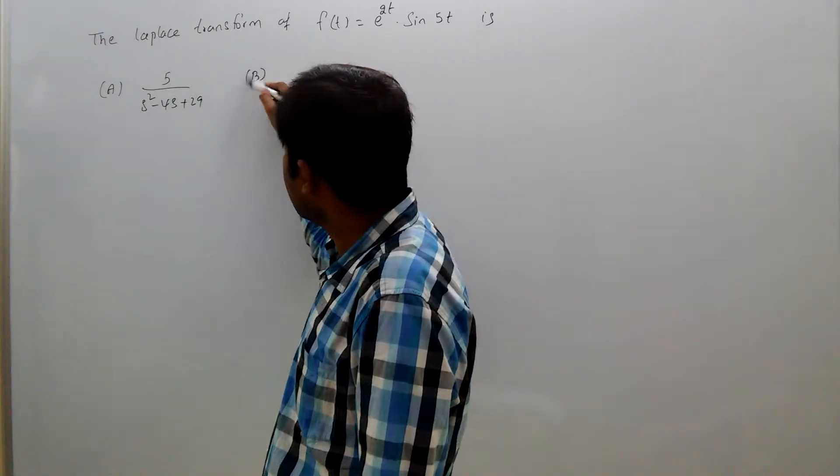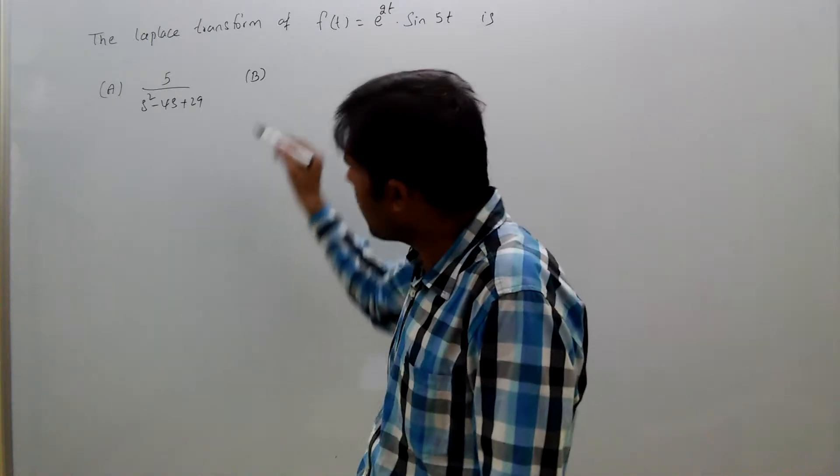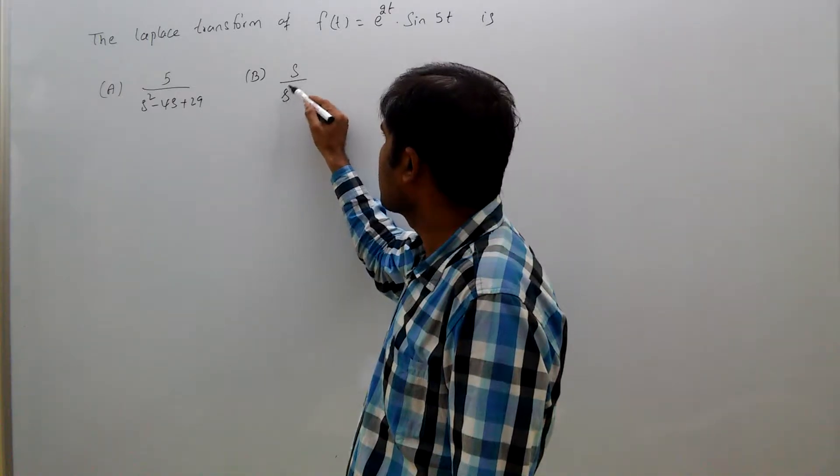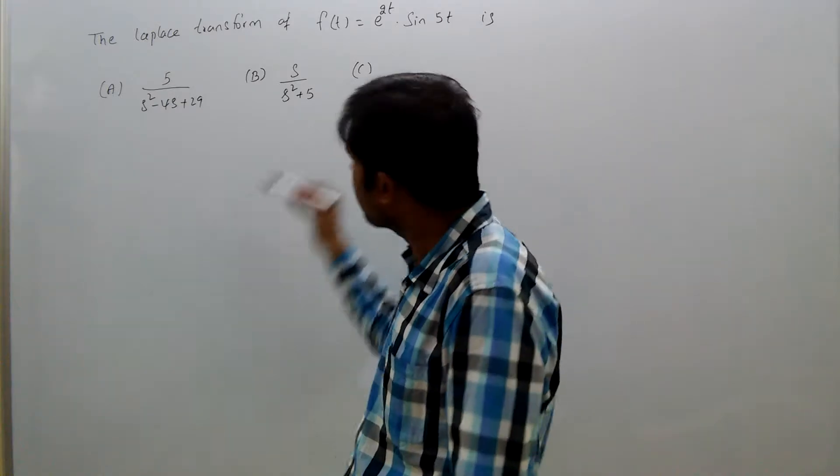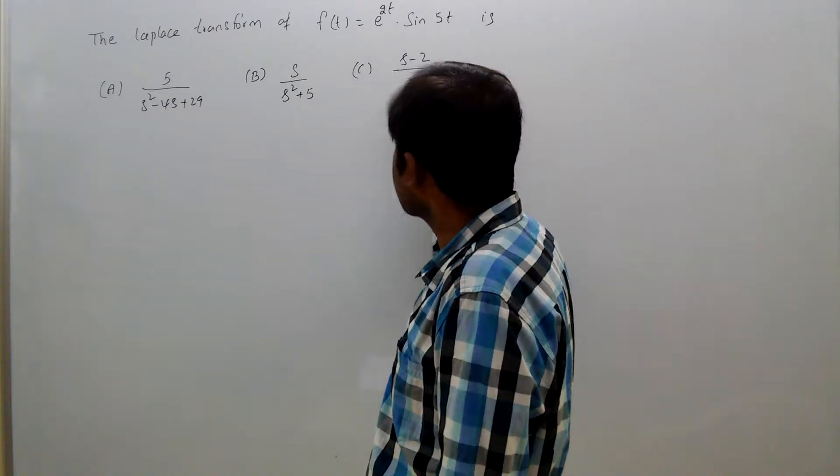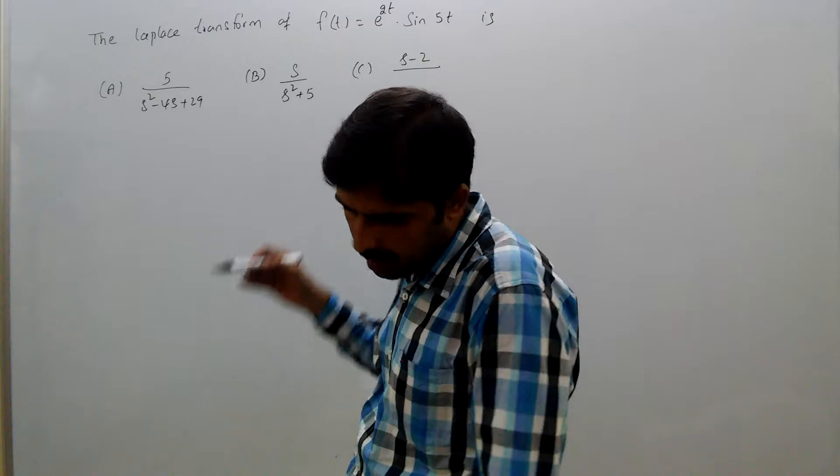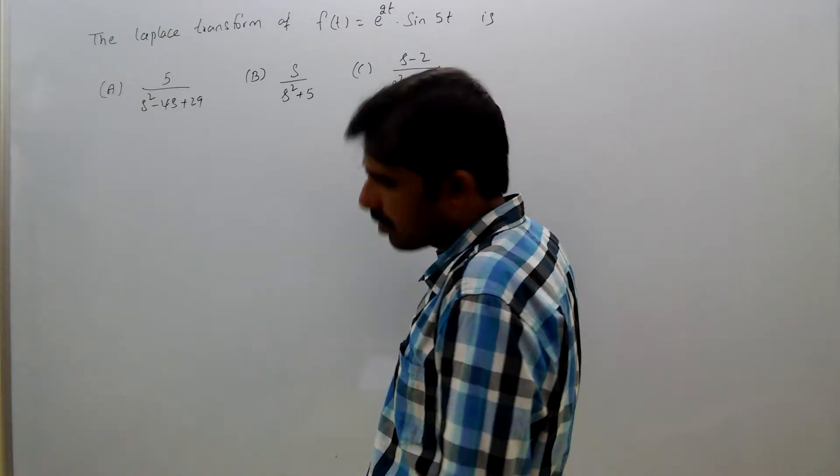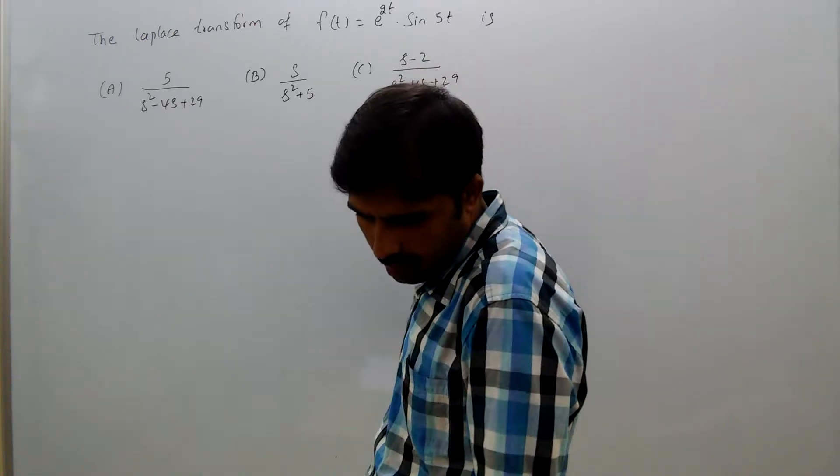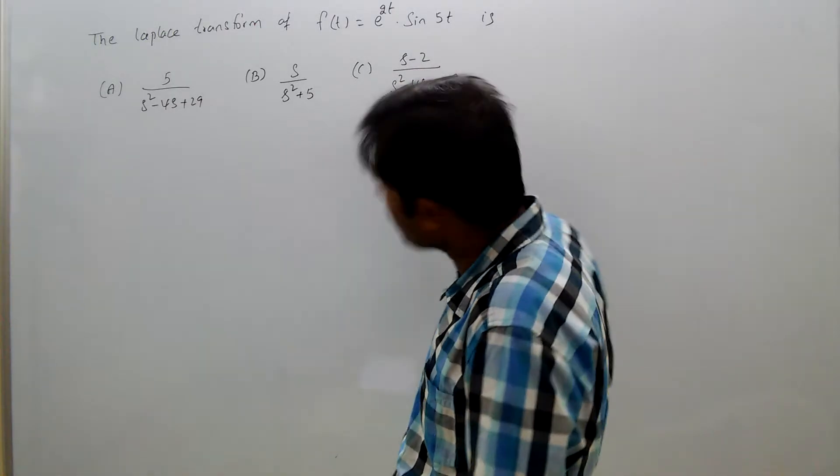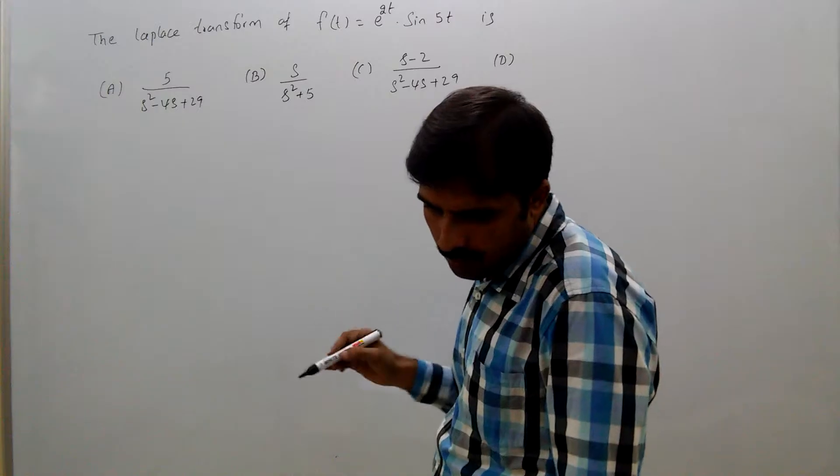option (b): s/(s^2 + 5), option (c): (s-2)/(s^2 - 4s + 29), option (d): 5/(s+5).